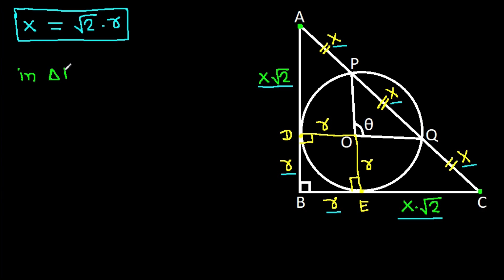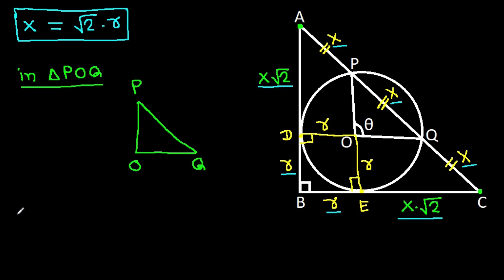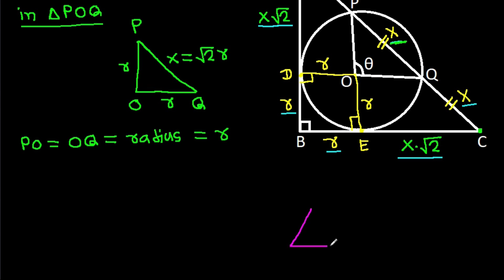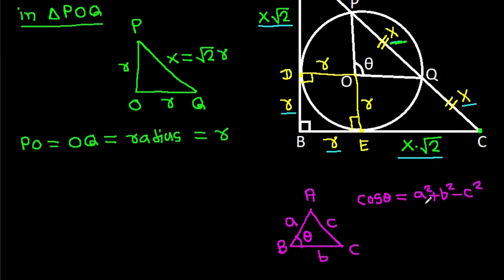Now in triangle POQ: PO equals OQ equals R (the radius), and PQ equals x, which equals √2·R. Using the cosine rule in any triangle ABC with sides a, b, c opposite angles: cos θ equals (a² + b² − c²) divided by 2ab.